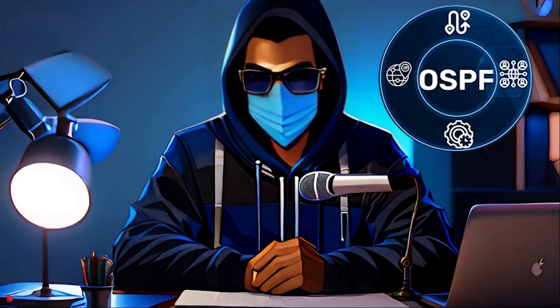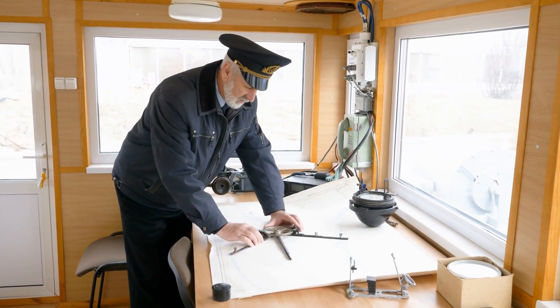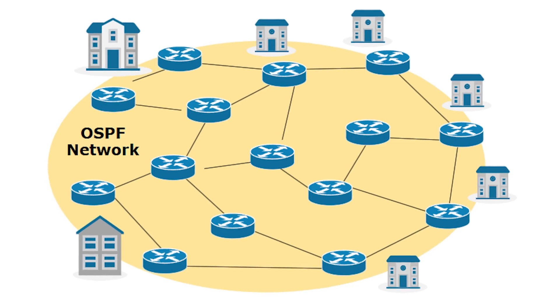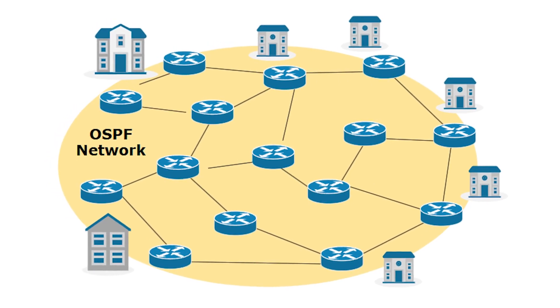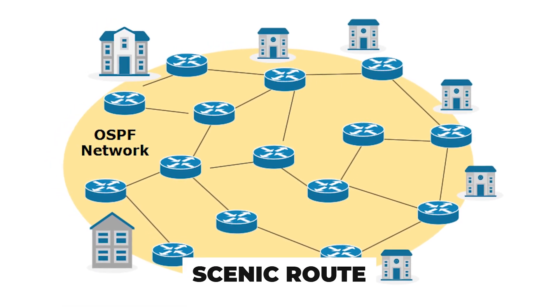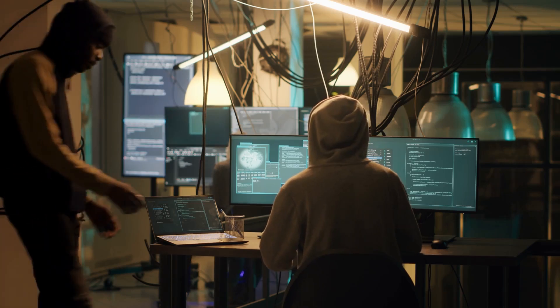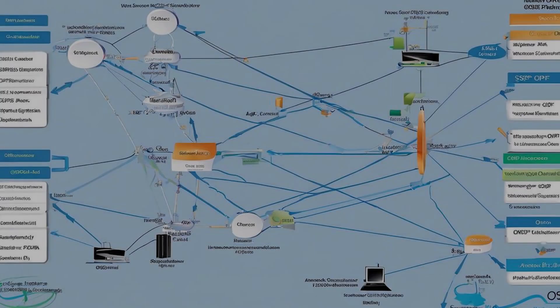Then we have OSPF — the protocol that helps routers find the best path, like a seasoned navigator plotting the quickest route on a map. It's essential for large networks to prevent data from taking the scenic route and slowing things down. If misconfigured, however, data might end up on a detour through Hackerland.